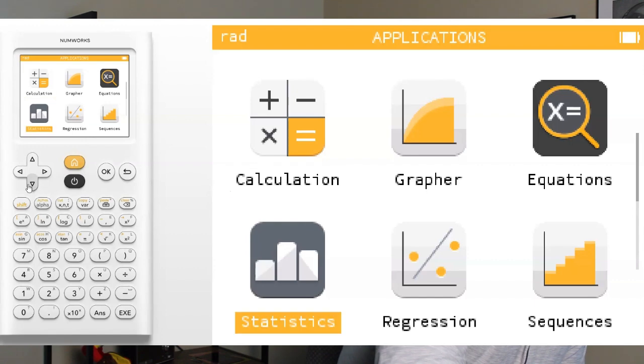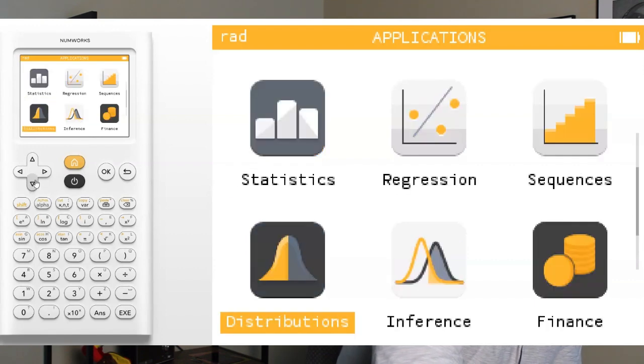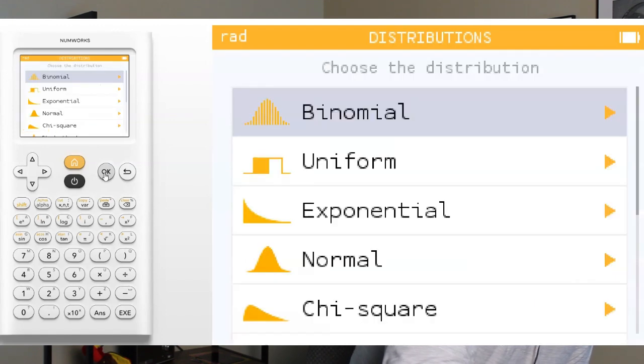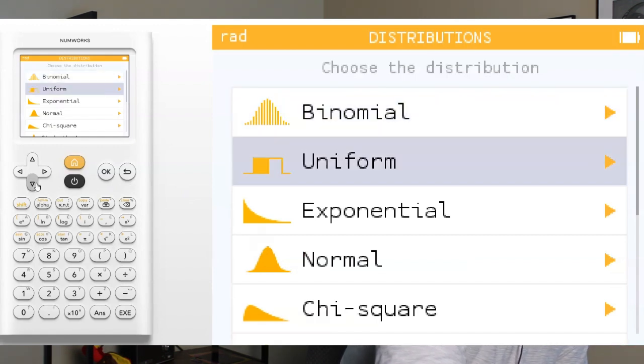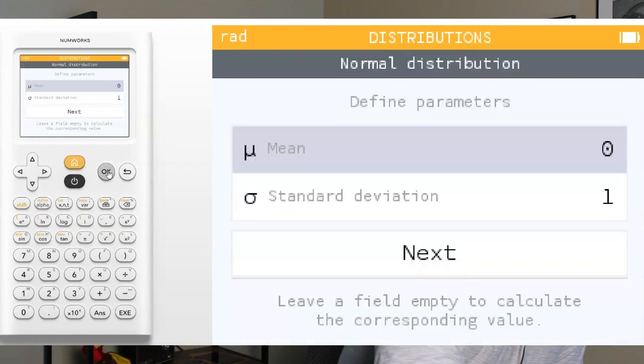This takes us to all the different apps. We're going to move down till we see the app for distribution. Picture there even looks like a normal distribution, and click on OK. Now, there are several different distributions you can work with, but in this video, we're going to focus on how to use the normal distribution.